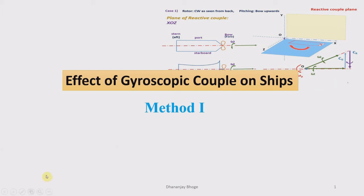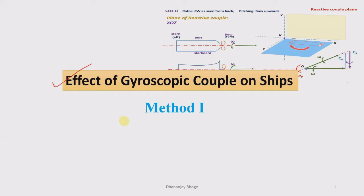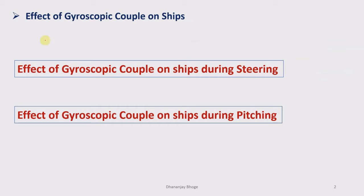Today in this lecture we will study the effect of gyroscopic couple on ships using Method 1. Before going into this lecture, I recommend you watch my lecture on introduction to gyroscopic couple, where I taught you how to identify the planes of spin, plane of precession, plane of active and reactive gyroscopic couples, and how to represent these angular quantities using a vector.